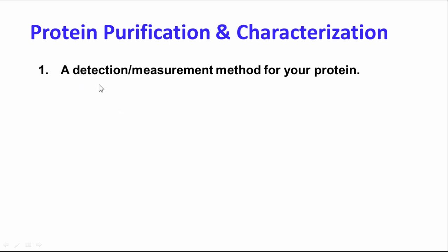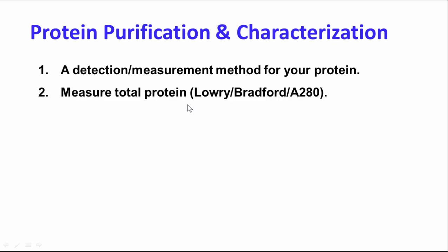The first thing you need to do in protein purification and characterization is detect and measure — you need a detection or measurement method for your protein. If it's an enzyme, you can use an enzyme assay in which you measure substrate disappearance or product appearance. Or if it's a colored protein, you can measure how much of that color is there. You also need to measure total protein.